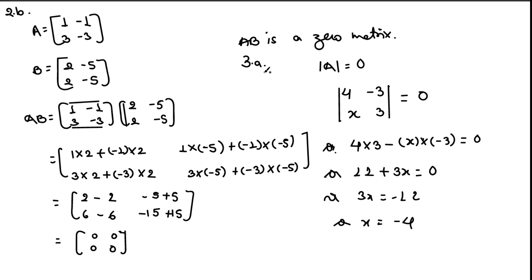Question number 3a: for what value of x is the inverse of the matrix [[4, −3], [x, 3]] not defined? For a matrix, if its determinant is 0 — that is, if the matrix is singular — then its inverse is not defined. So we set the determinant of the given matrix equal to 0, and solving we get x = −4.